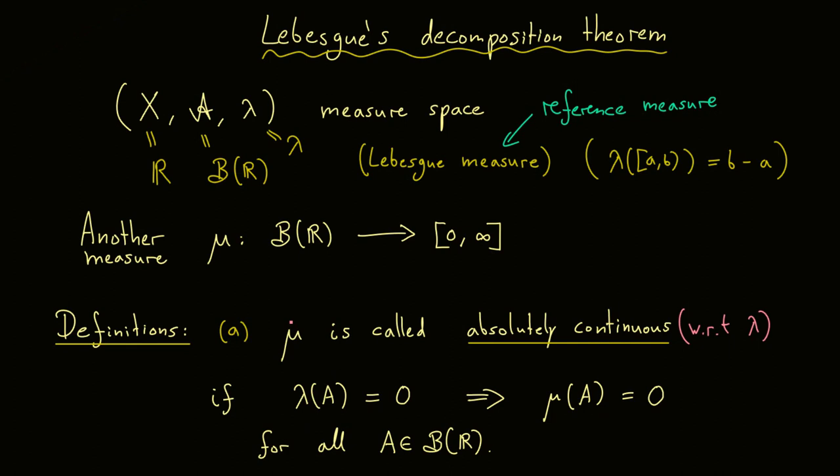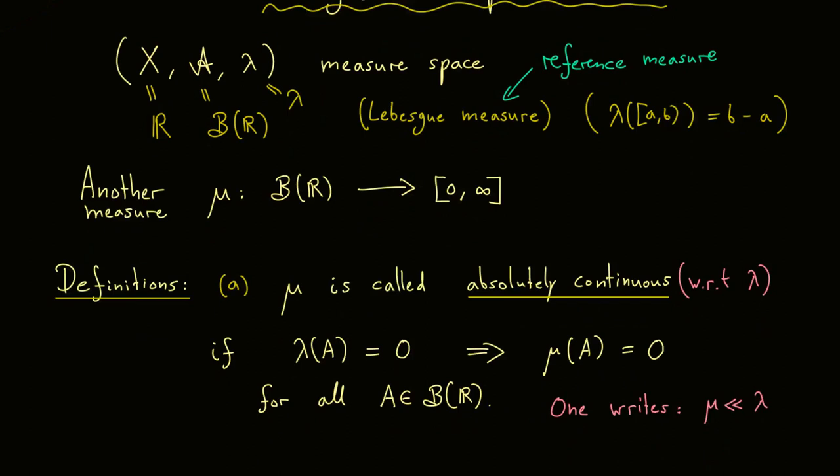However of course it is also allowed that mu sends more than these sets to zero. Now there is a short notation for this. One writes usually mu and then lambda. So if you see this symbol for measures you know it means just absolutely continuous. One way I remember the symbol is the arrow here in the definition goes the same way as the arrow here in the symbol.